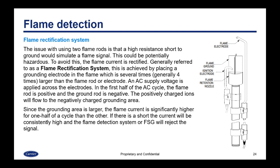To avoid this, the flame current is rectified. Generally referred to as a flame rectification system, this is achieved by placing a grounding electrode in the flame that is several times — generally four times — larger than the flame rod or electrode. An AC supply voltage is applied across the electrodes. In the first half cycle of AC, the flame rod is positive and the ground rod is negative. The positively charged ions will flow into the negatively charged grounding area. Since the grounding area is larger, the flame current is significantly higher for one half of a cycle than the other. If there is a short, the current will be consistently high and the flame detection system will reject the signal.